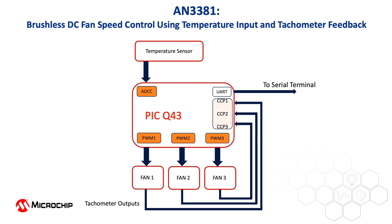Now that the temperature has been obtained, the fan speed can be set. This is done using two peripherals: PWM and CCP. A typical DC fan uses PWM for speed control. However, in this project we are using four-wire DC brushless motors. These have the usual power and ground wires, along with a PWM input and a tachometer output. Each fan has two embedded magnets so that when it rotates, it gives two pulses per revolution via the tachometer wire. This tachometer output is routed to a CCP peripheral, one for each fan for a total of three.